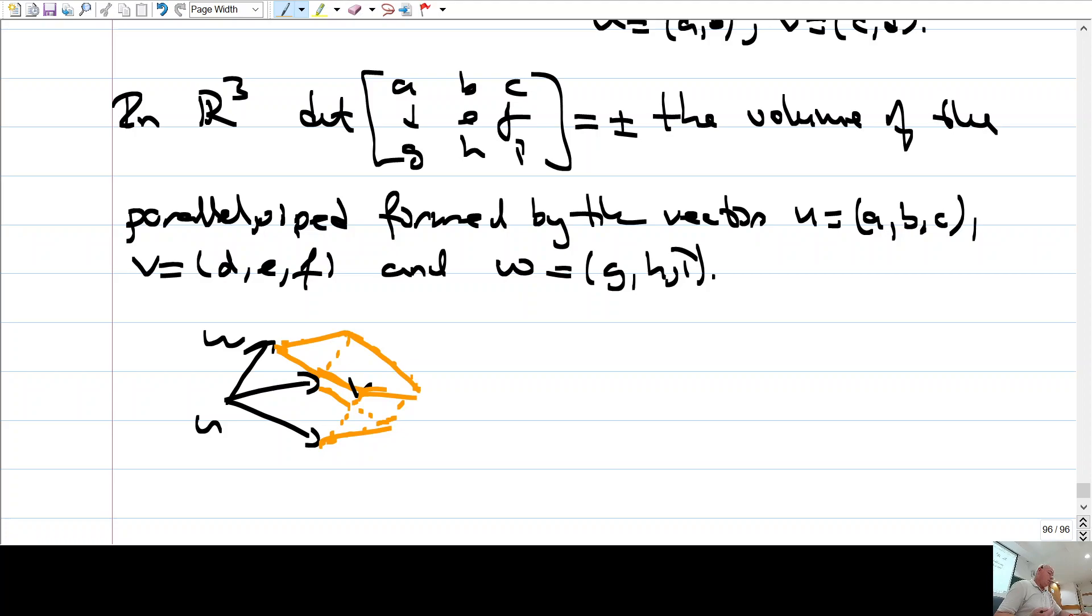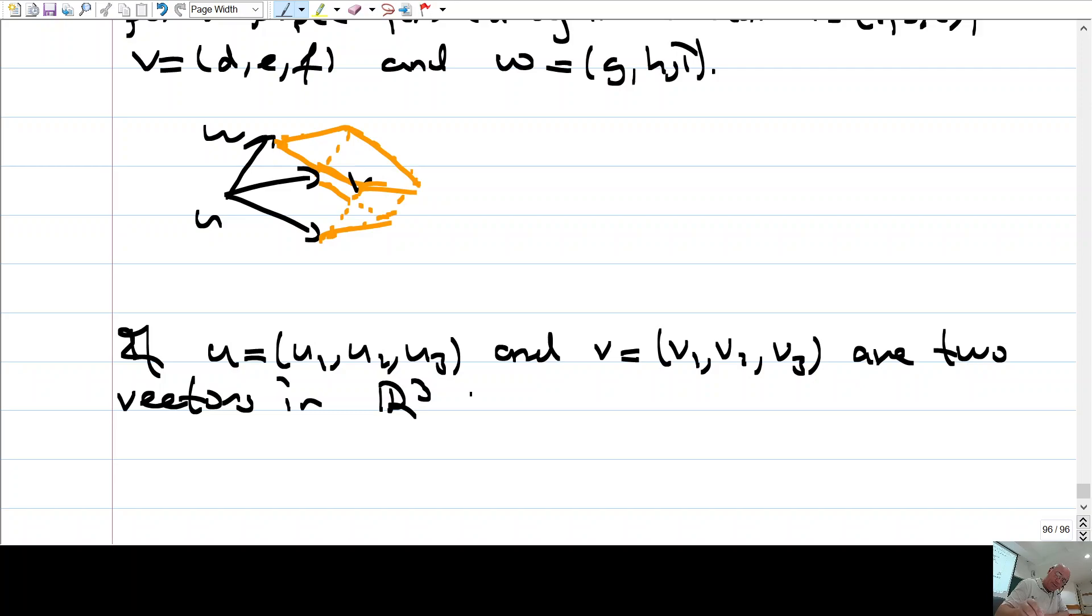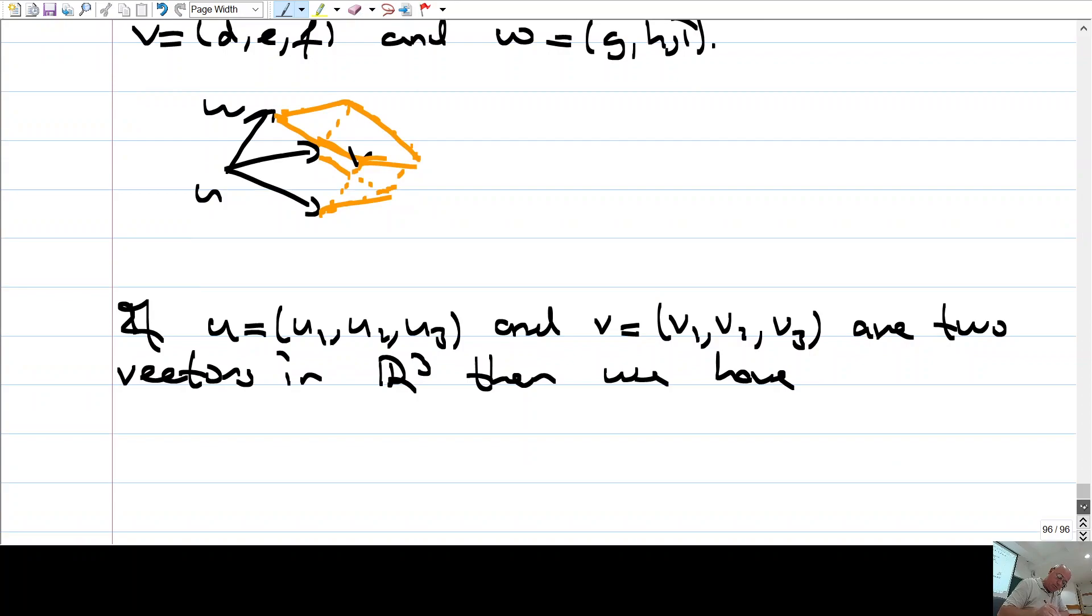Evet. What about the relation between cross product and determinants? If u, let's say, u1, u2, u3 and v, v1, v2, v3 are two vectors in r3, then we have what? But, şöyle bir şey var.